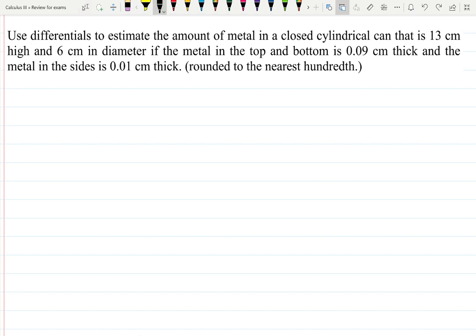Use differentials to estimate the amount of metal in a closed cylindrical can that is 13 centimeters high and 6 centimeters in diameter if the metal in the top and bottom is 0.09 centimeters thick and the metal in the sides is 0.01 centimeters thick, rounded to the nearest hundredth.